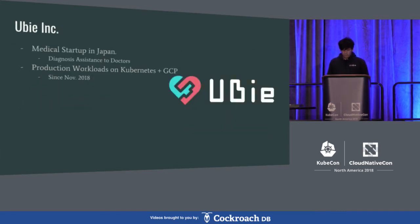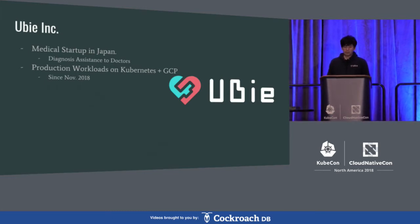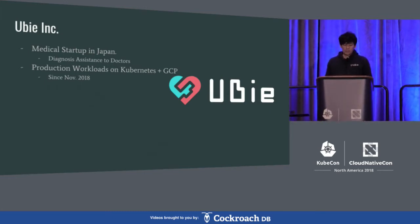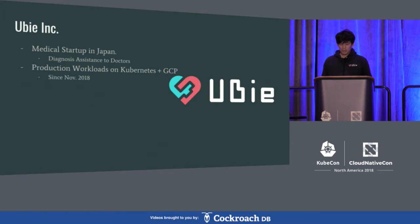Let me talk about my company. UB is a medical startup in Japan. The service helps doctors to diagnose patients, and our product and service is running everything on Kubernetes in GCP.